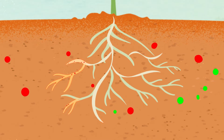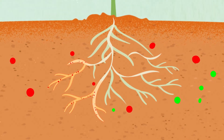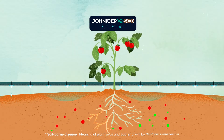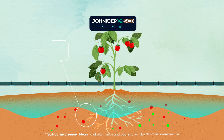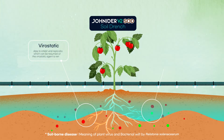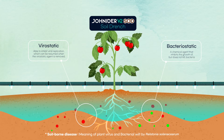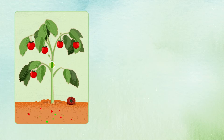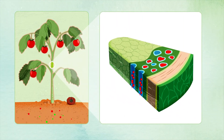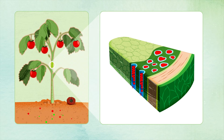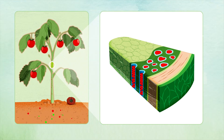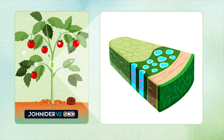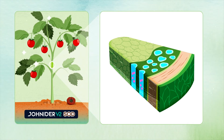Joneter V2 SOD suppresses the activity of soil-borne virus and bacteria. When Joneter V2 SOD gets absorbed into the soil, it plays the role of putting soil-borne virus and bacteria in a static state and prevents them from penetrating into roots and infecting plants. Joneter V2 SOD is known to be more effective in inhibiting bacterial wilt by Ralstonia solanacearum than inhibiting viral activities, and spurs the healthy growth of crops, including tomatoes weakened by bacterial wilt by Ralstonia solanacearum.